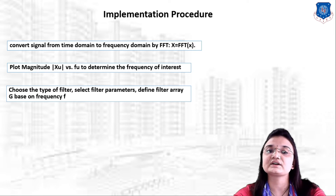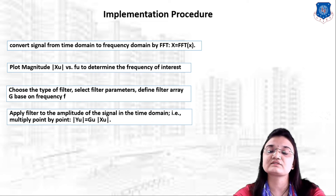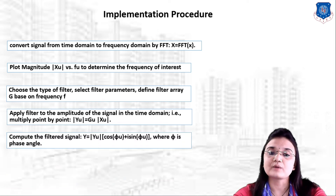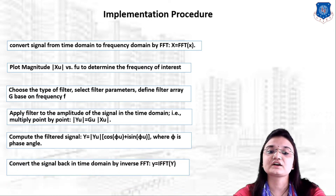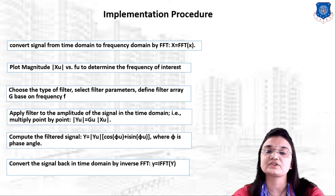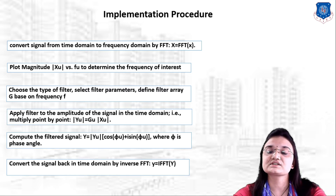Step 4 — apply the filter to the amplitude of the signal by multiplying point by point: |Y(u)| = G(u) · |X(u)|. Step 5 — compute the filtered signal as y = |Y(u)| · (cos φ(u) + sin φ(u)), where φ is the phase. Step 6 — convert the signal back into the time domain using the Inverse Fast Fourier Transform.